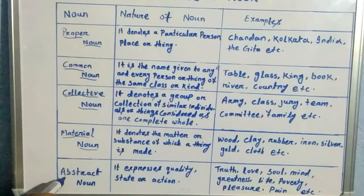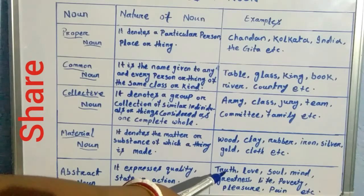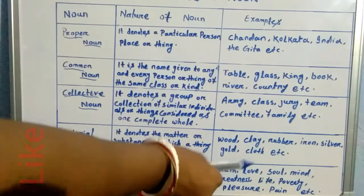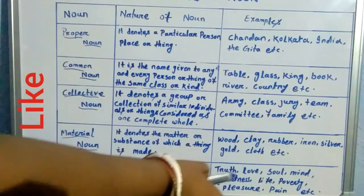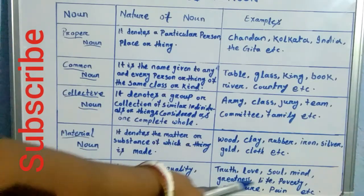Then come to the last kind of noun and that is Abstract Noun. It expresses quality, state or action. And the examples are Truth, Love, Soul, Mind, Greatness, Life, Poverty, Pleasure, Pain, etc.